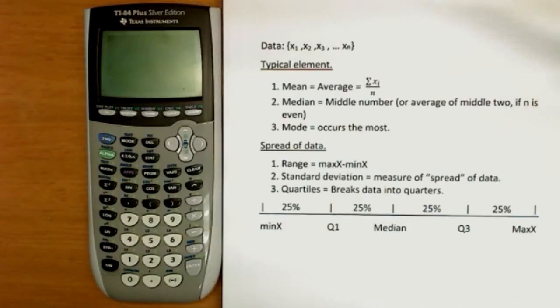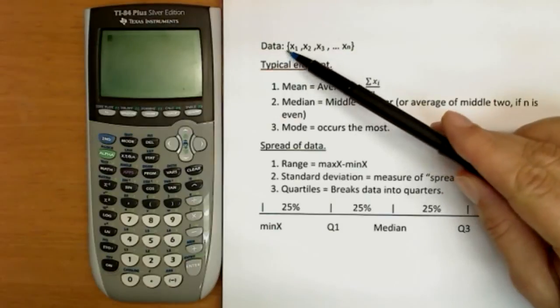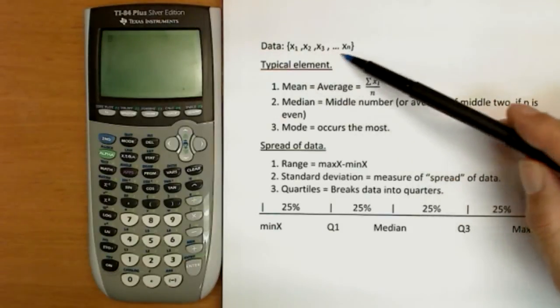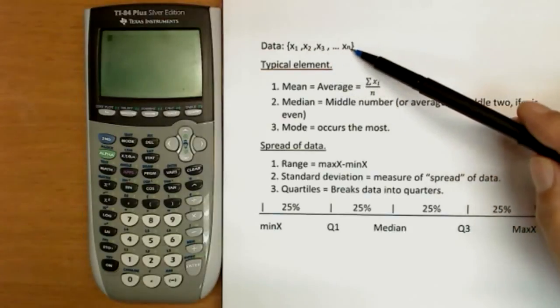Okay, we're talking about statistics and today we're going to talk about some definitions of statistical terms. To make things a little easier for us to follow, we're going to define a few things. Our data is a set of numbers, x1 to xn. So we write those with little subscripts beside the numbers.